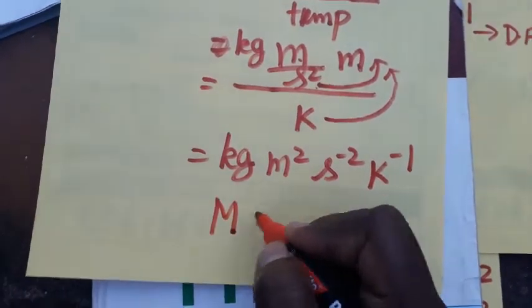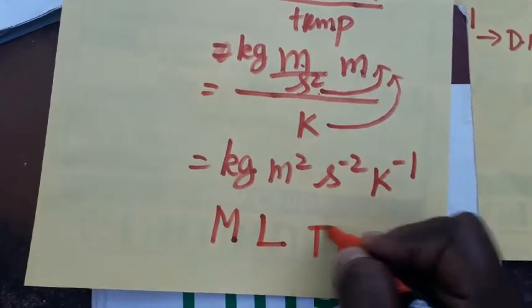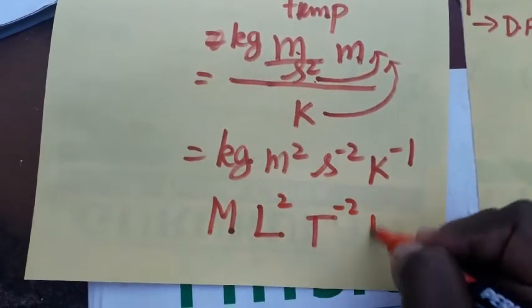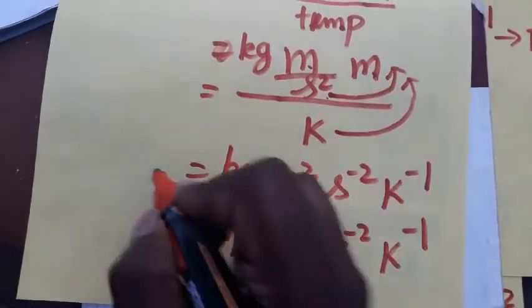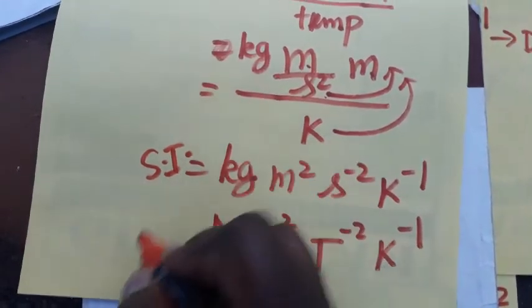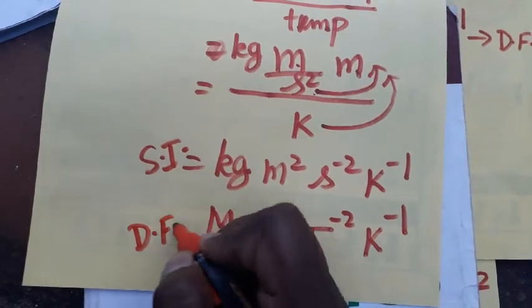We will get mass as M, length as L, time as T. So L is square, T power minus two, kelvin power minus one. So entropy S, a unit and dimensional formula - it is SI unit and it is a dimensional formula. Thank you.